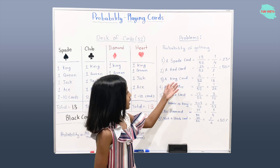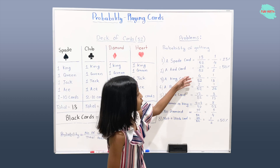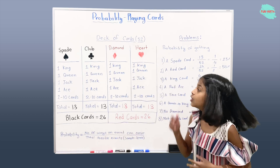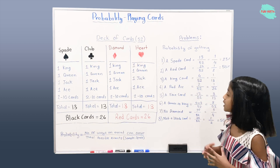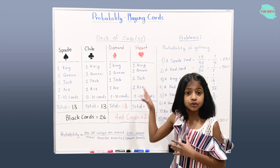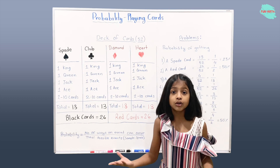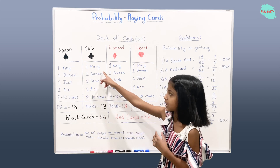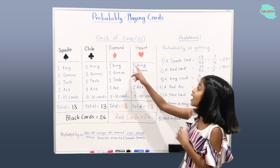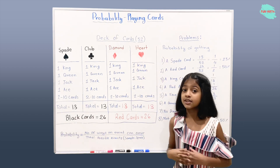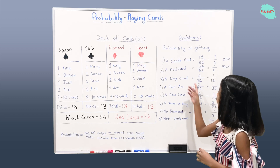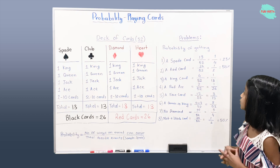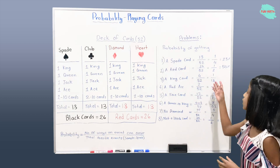Probability of getting a king card is 4 over 52. We have 4 as our numerator because in these 4 suits there are total 4 kings: 1 king in spade suit, 1 king in club suit, 1 king in diamond suit, and 1 king in heart suit. 4 over 52 is also 1 over 13.